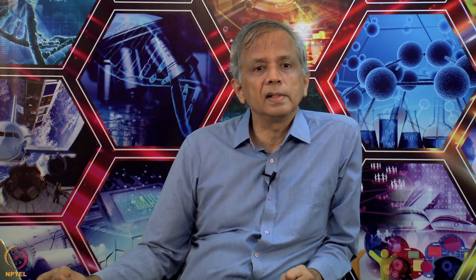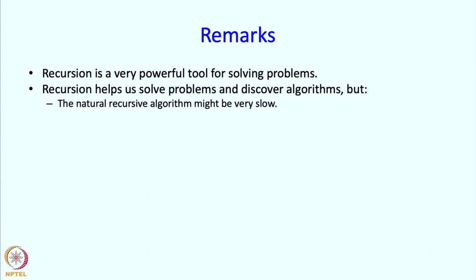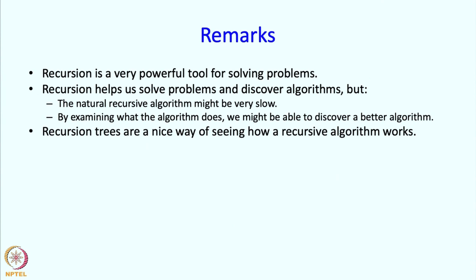Okay, so we have done this and we were able to get Vd to be calculated very fast. So what do we learn from this? We can see that recursion is a very powerful tool for solving problems. Recursion helps us solve problems and discover algorithms, but the natural recursive algorithm might be very slow. By examining the algorithm, by seeing what it does, we might be able to discover a better algorithm. Then we also saw that recursion trees are a nice way of seeing how a recursive algorithm works.